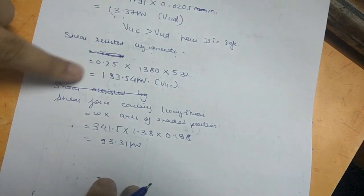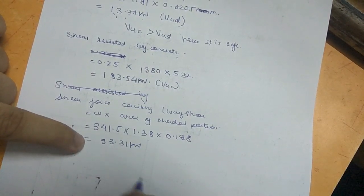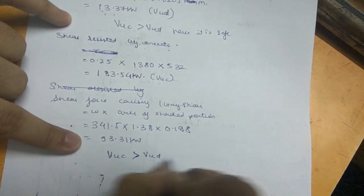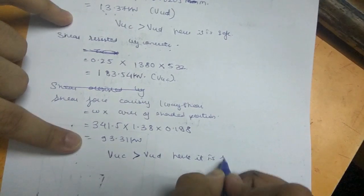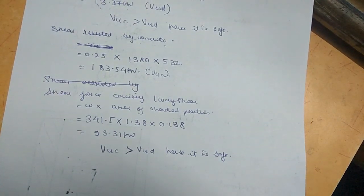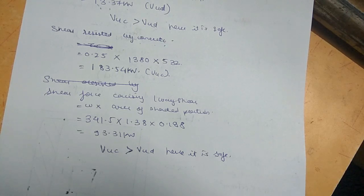VUC (183 kN) is greater than VUD (93.31 kN), hence the footing is safe in one-way shear in the X direction. Both the two-way shear check and the one-way shear check are complete, and in both cases the footing is safe. The next checks are for development length and load transfer.